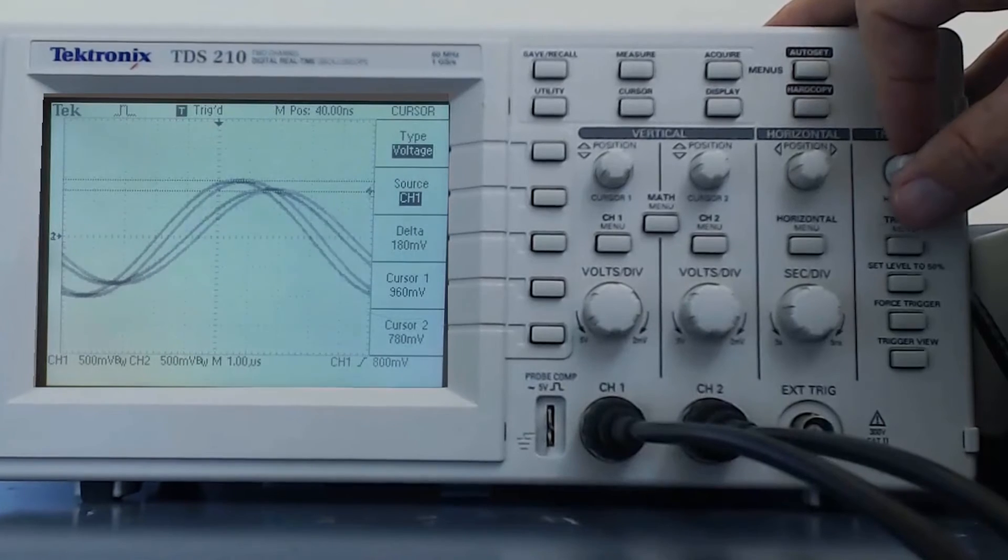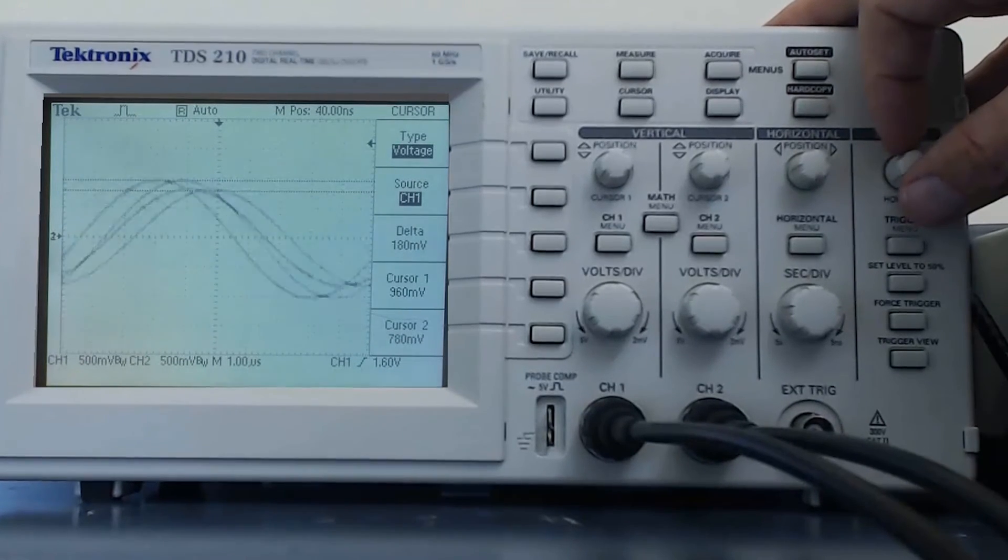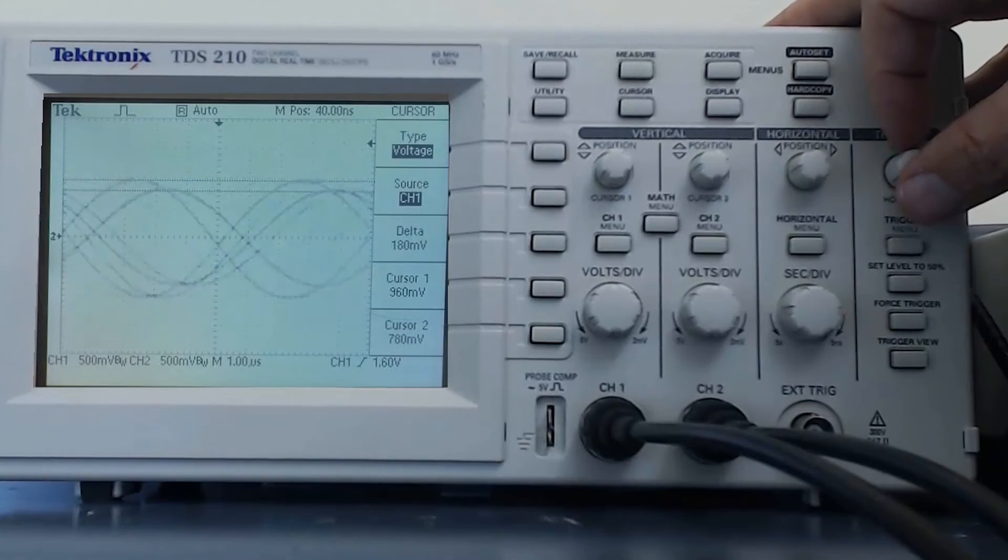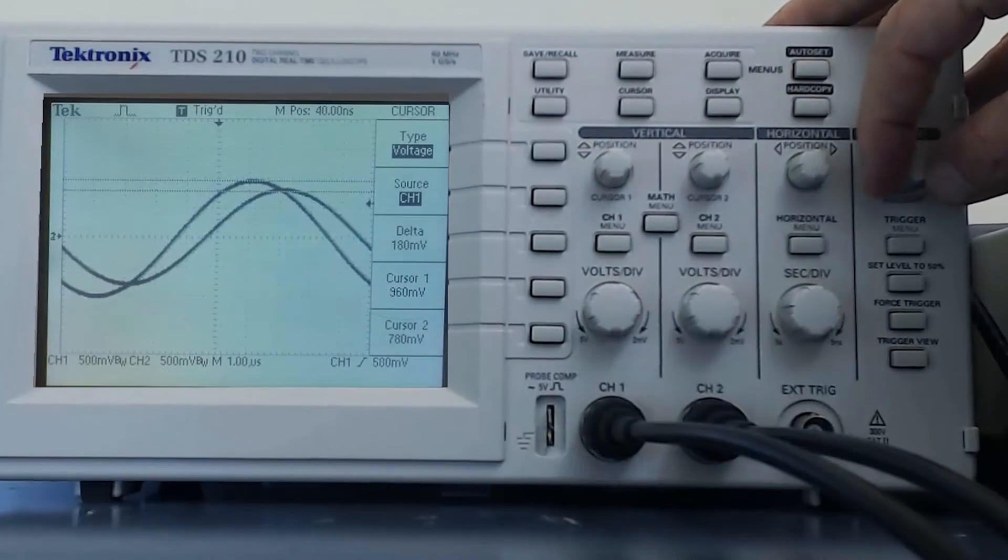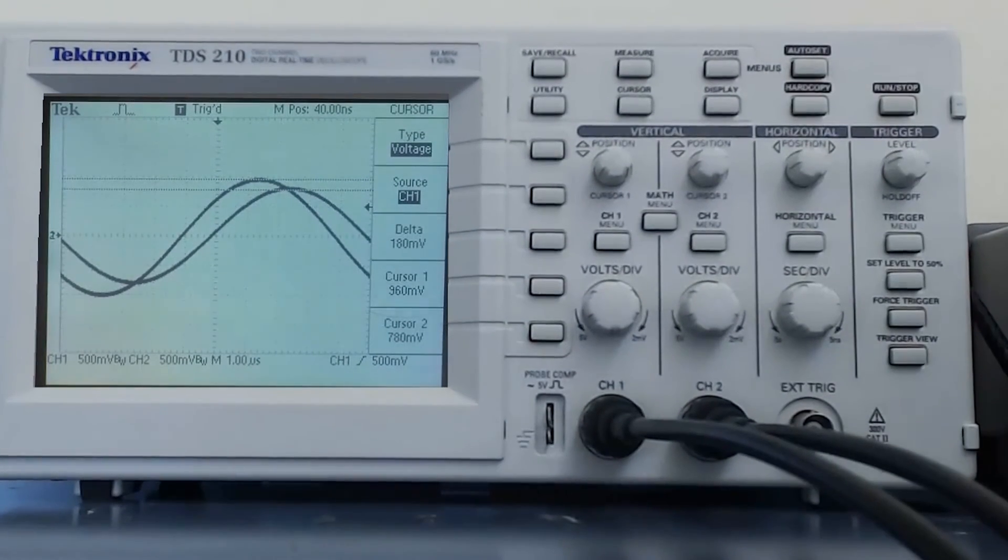If I adjust the trigger level above the actual waveform, the oscilloscope cannot grab onto the wave and the display becomes unstable. To grab one of the waves again, I simply need to adjust the trigger level into the middle of the wave.